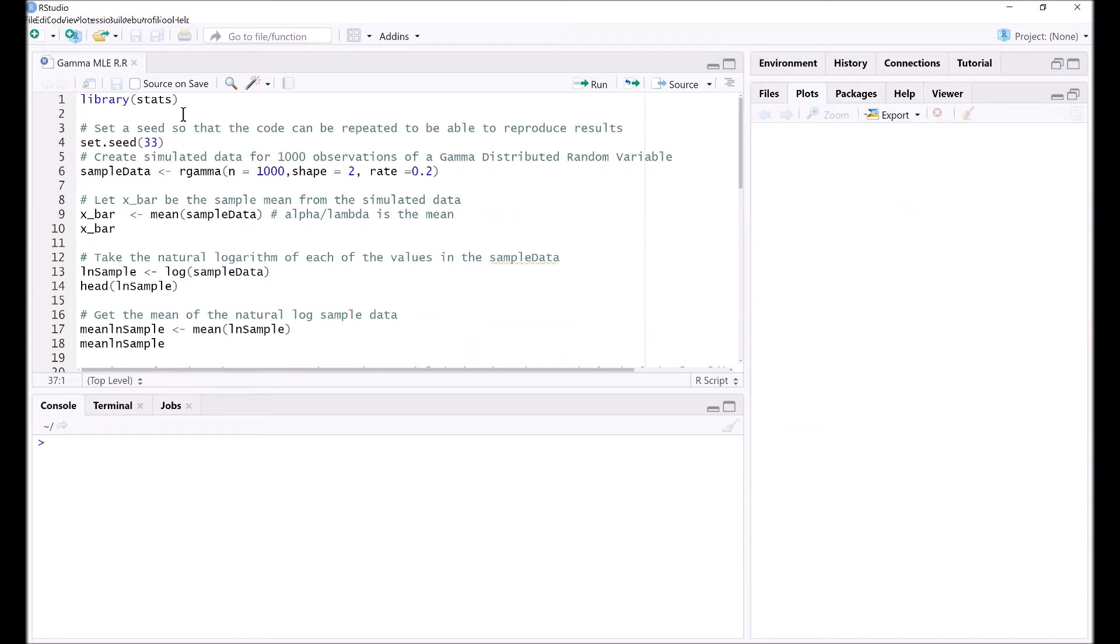The problem of how to solve for alpha hat is relatively simple if we can use a programming language. We will be using the R programming language. Firstly, we need to ensure that we have the stats library installed so that we can make use of the rgamma function. And we need to set a random seed so that you guys can reproduce the same results as mine, because we're carrying out random sampling.